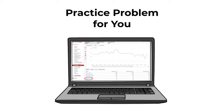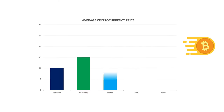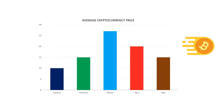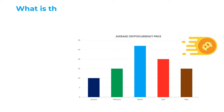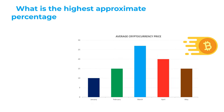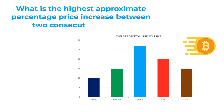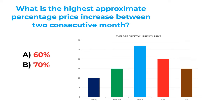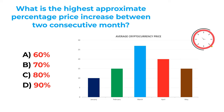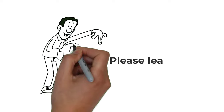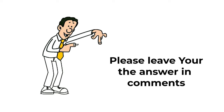Here's a practice problem. You're presented with a chart showing the average price of cryptocurrency for each month from January to May. You need to calculate the highest approximate percentage price increase between two consecutive months. Choices: A: 60%, B: 70%, C: 80%, D: 90%. Post your answer in the comments.